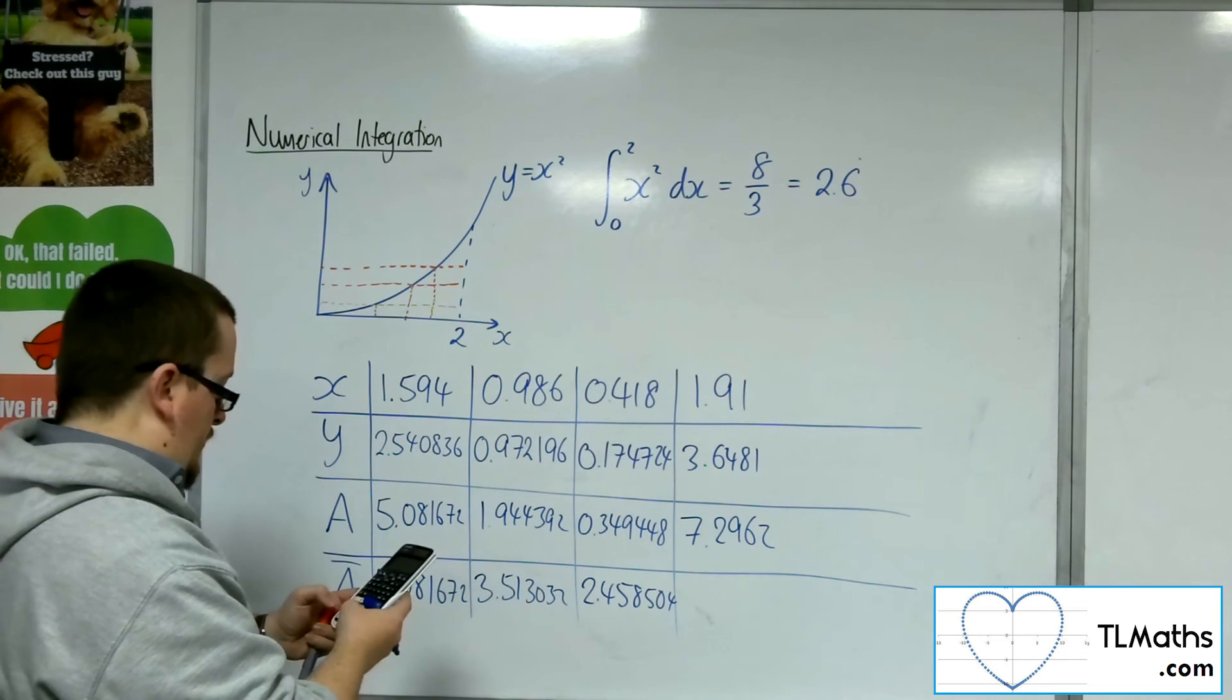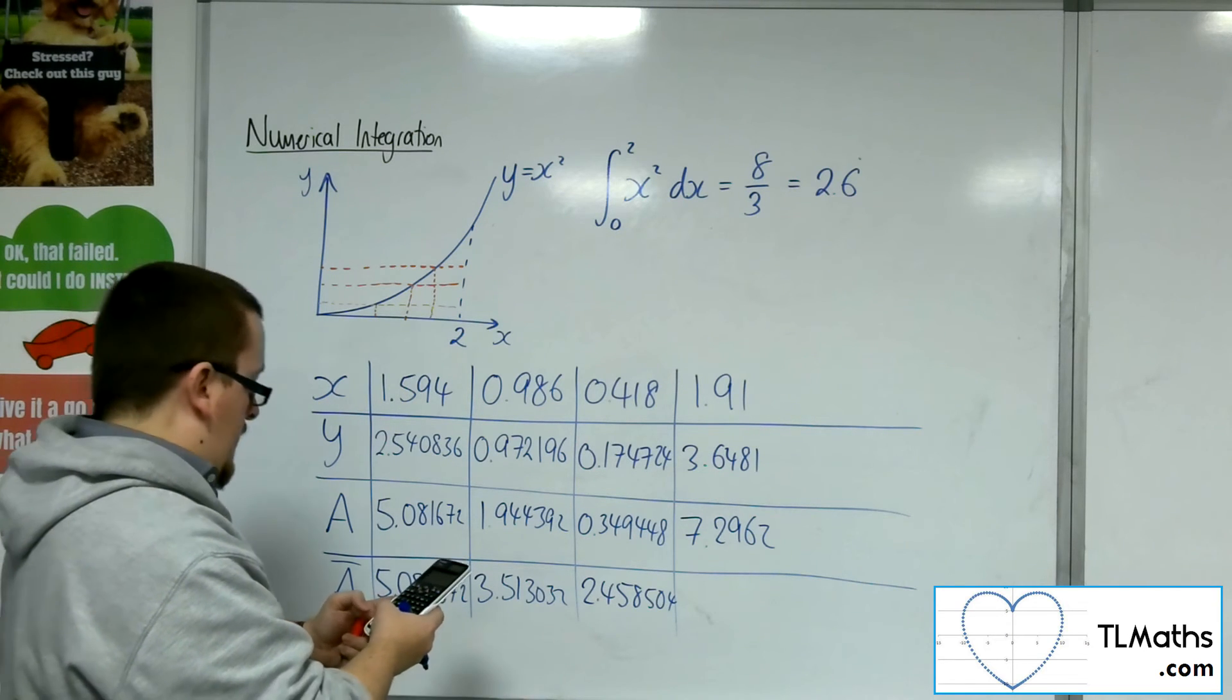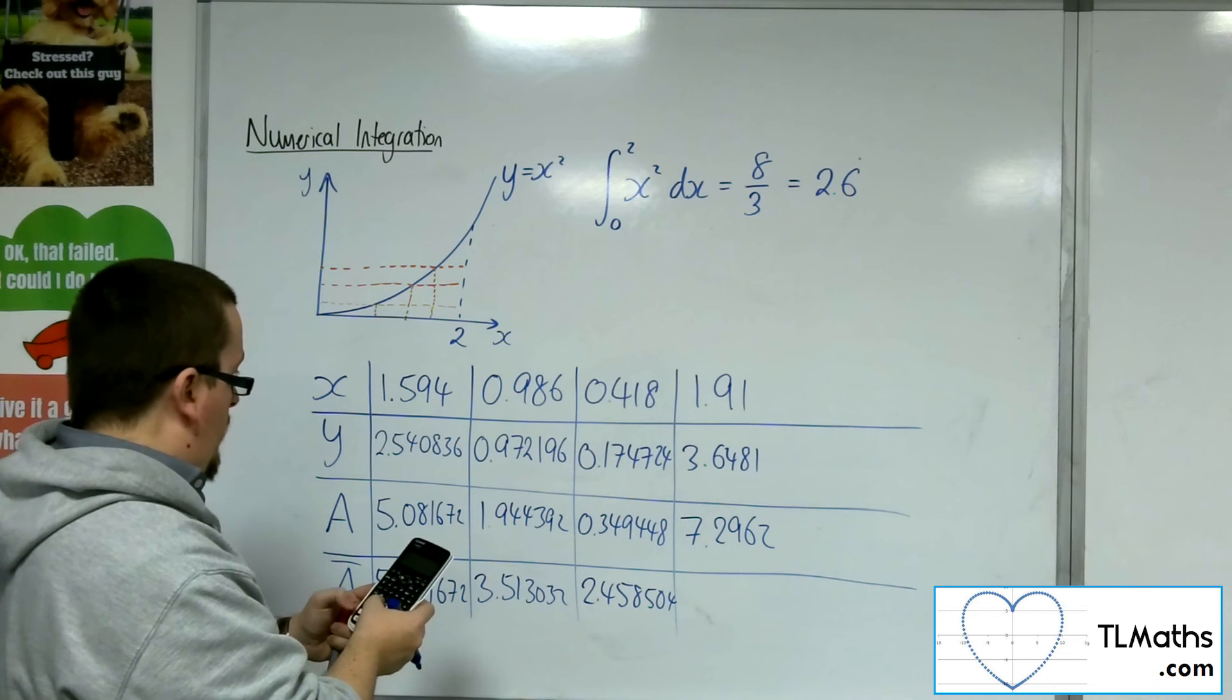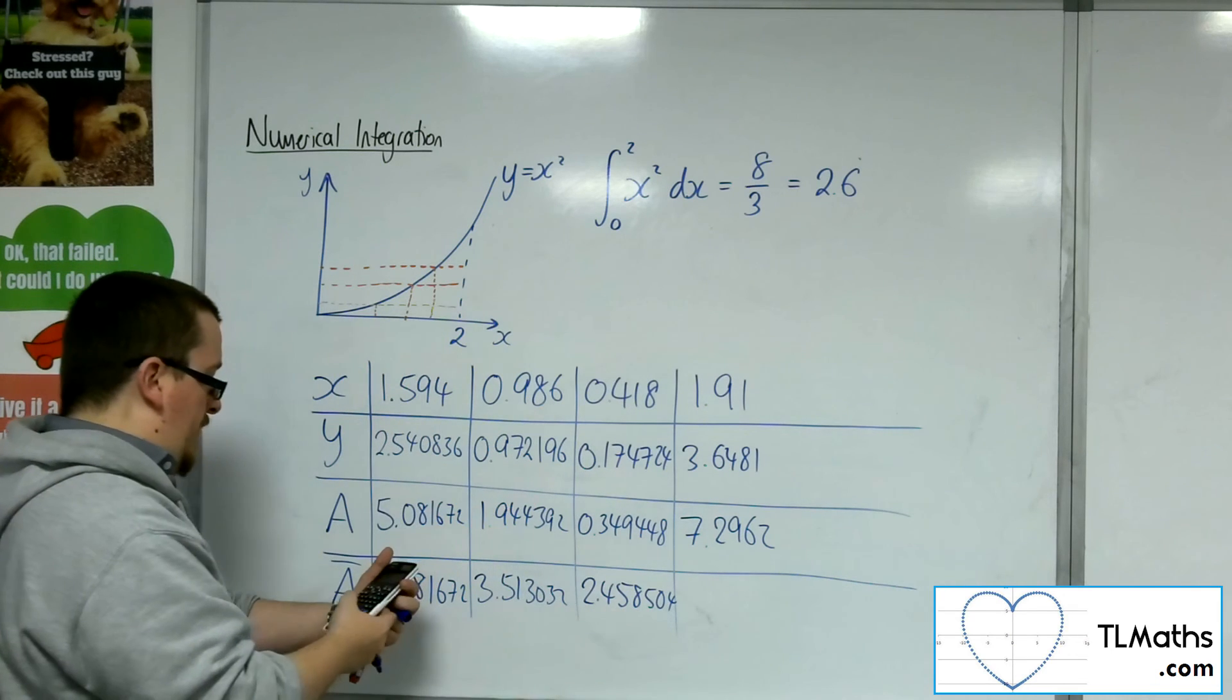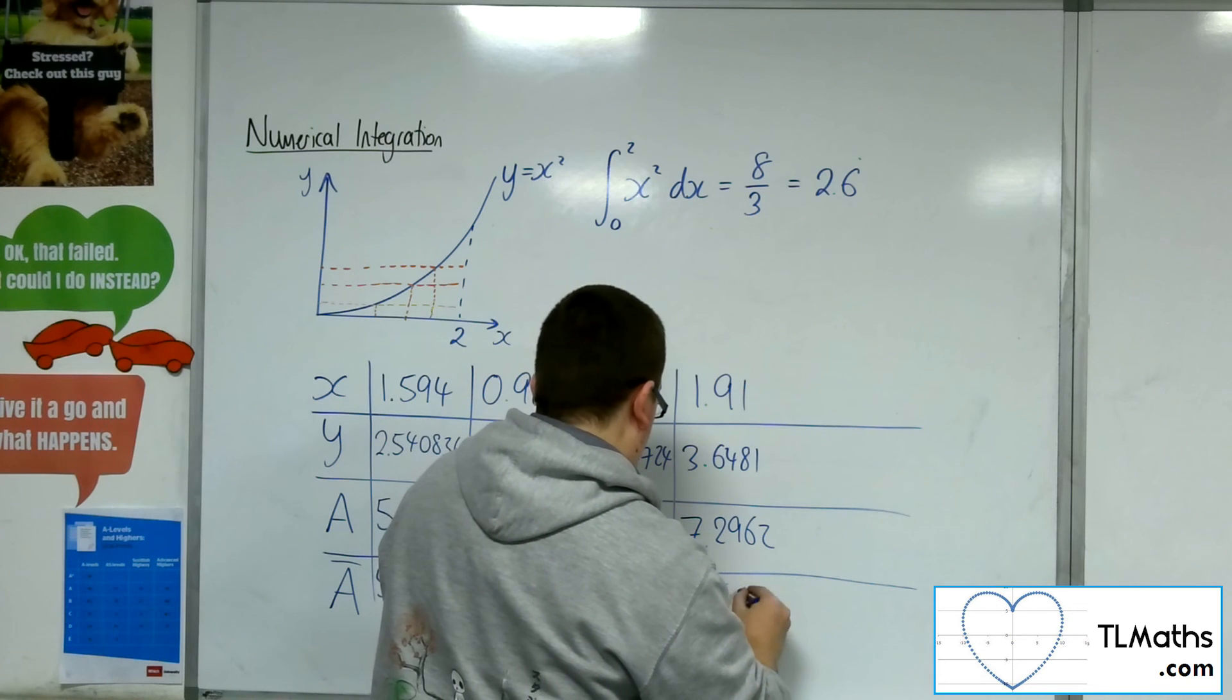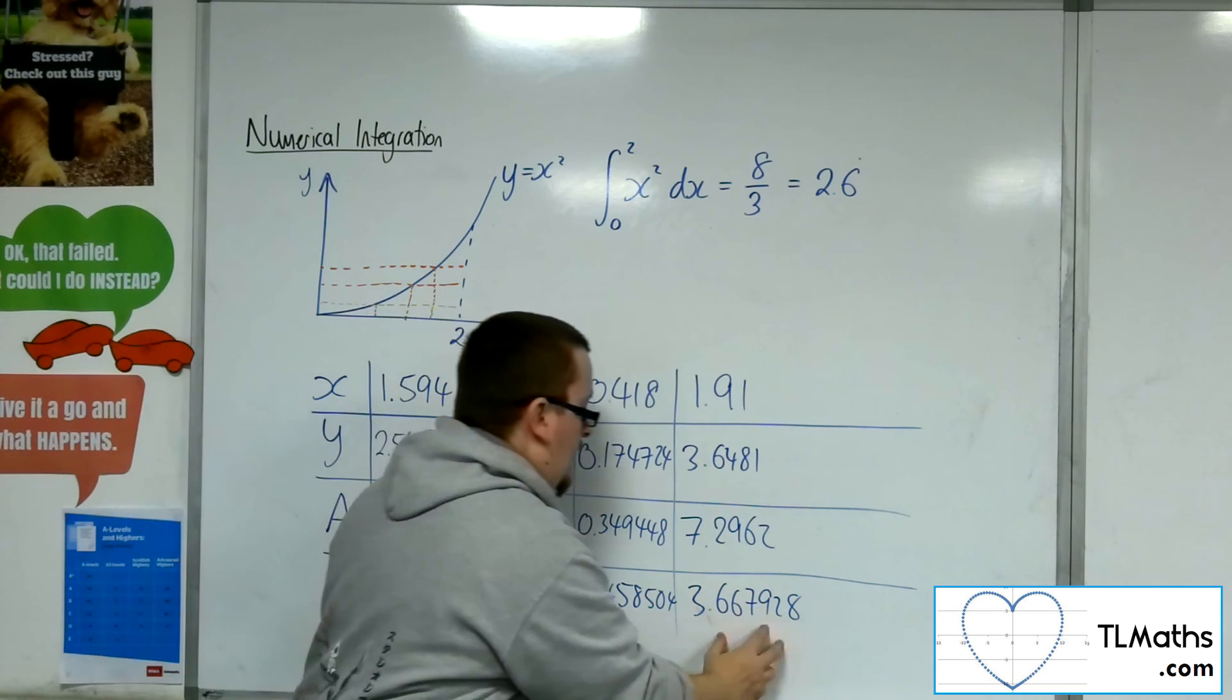Add that on to the previous results: 0.349448 plus 1.944392 plus 5.081672. I should have had a cumulative number as well. Then divide that by 4, and we get 3.667928. So I've added on this extra rectangle and done the average.